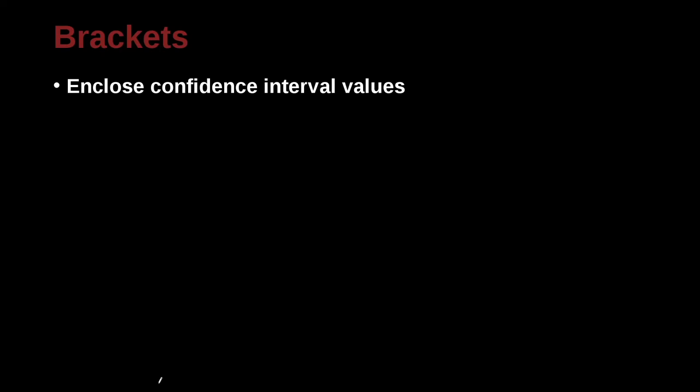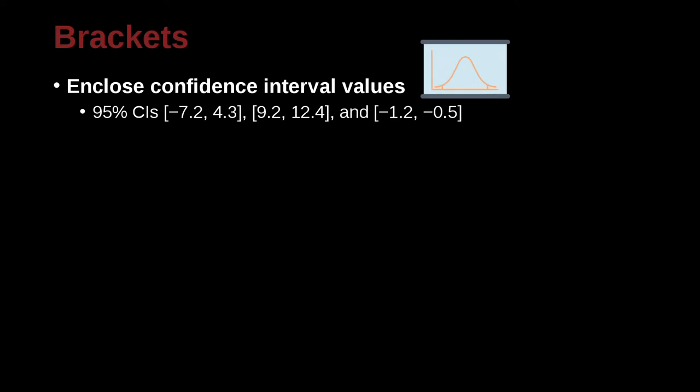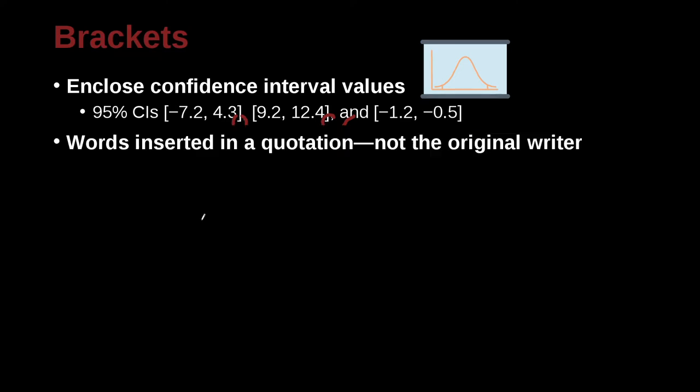Brackets. You can use brackets to enclose confidence intervals. So for example, here. And again, we have a nice example of the comma, comma and conjunction serial.